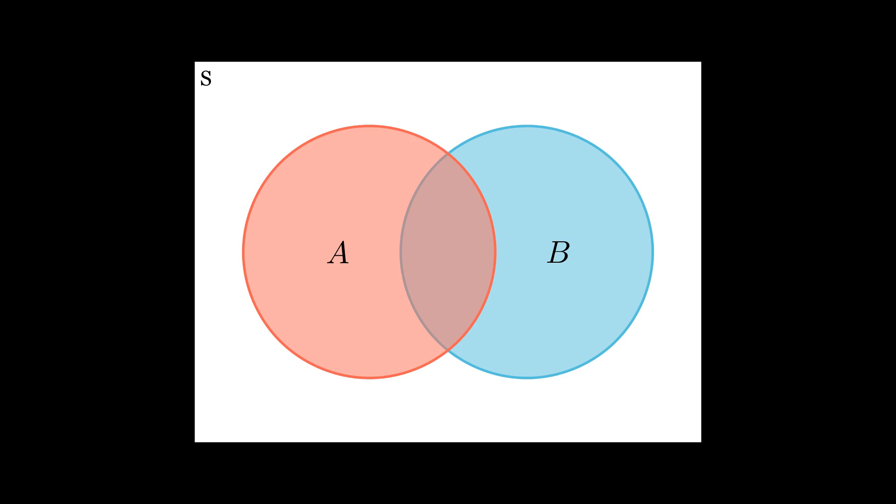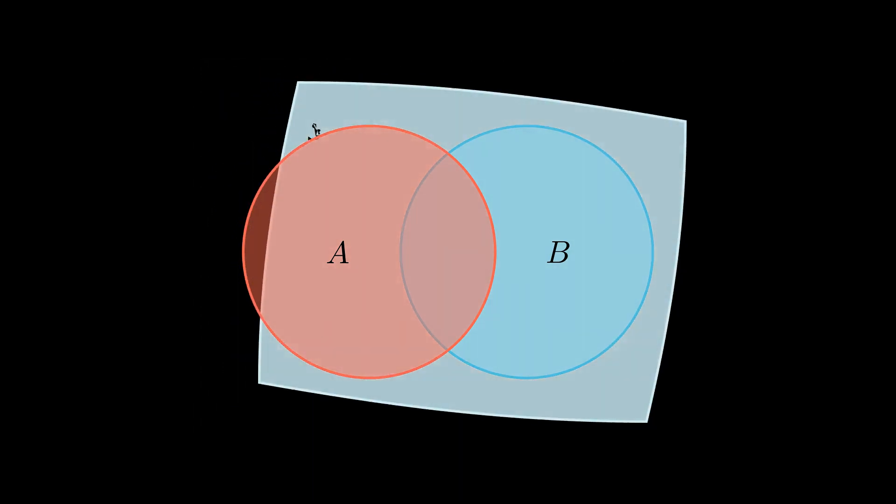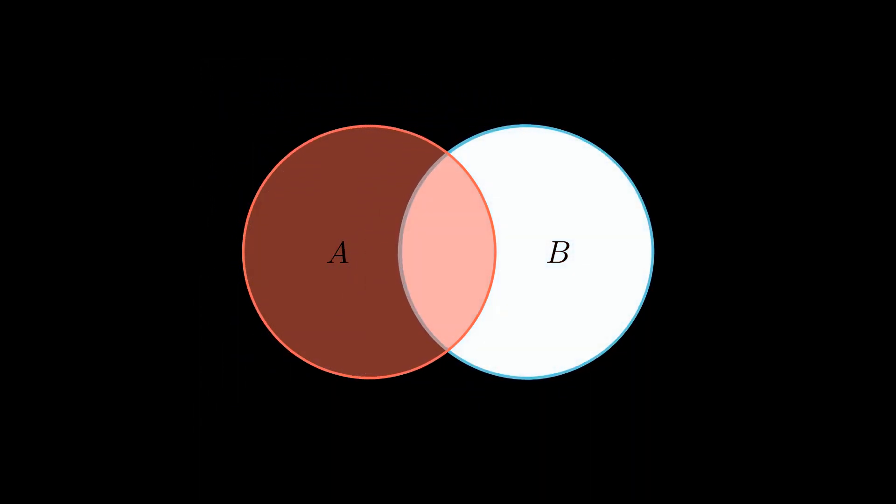When B has already happened, the sample space will be reduced to B. The new sample space now will become B. The probability of A occurring within this new context is the portion of A that is within B. As you might have guessed, this portion is nothing but intersection of A and B.